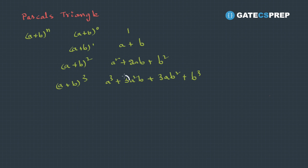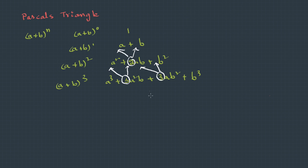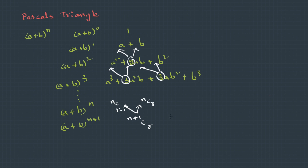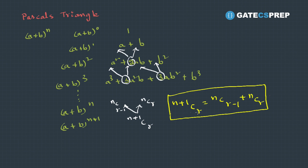It is observed that the coefficient at a specific position in a specific row is the sum of the terms in the previous row at the same position and the previous position. For example, 3 is the sum of 1 and 2, and 2 is the sum of 1 and 1. Generalizing this: nC(r) for row (n+1) gives us n+1Cr = nC(r-1) + nCr. This is an important observation to be memorized.